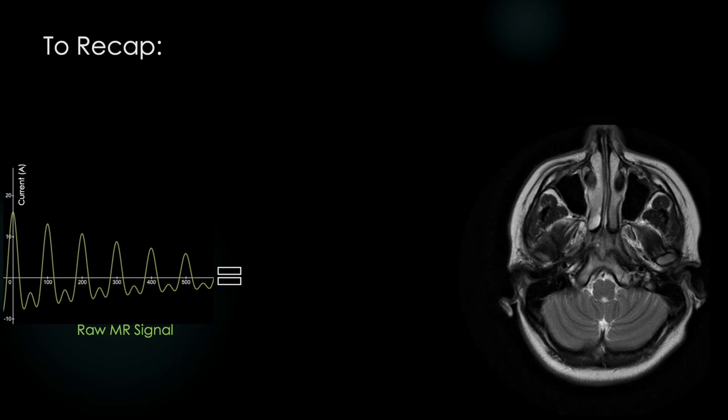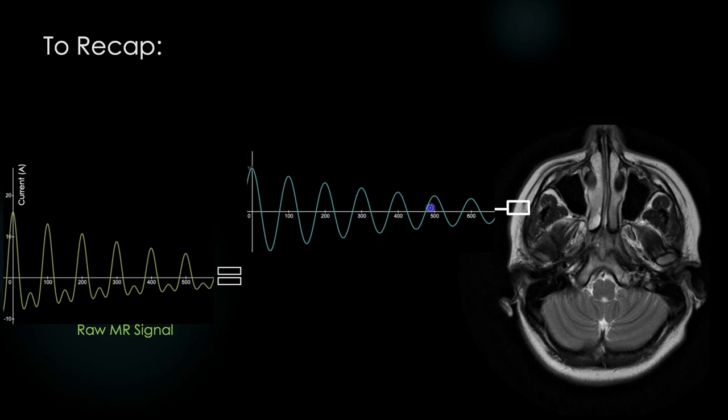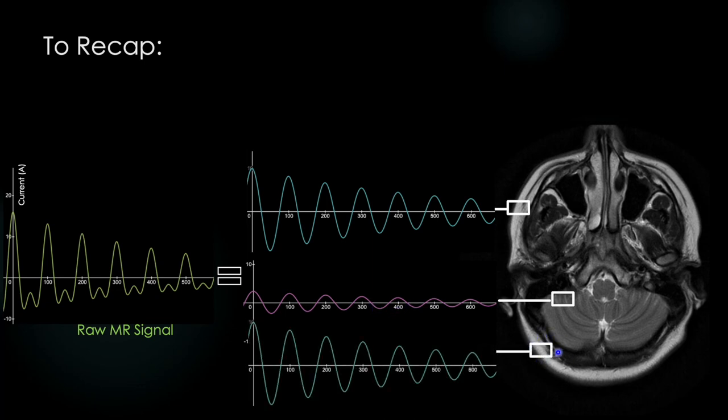So we can choose a voxel size and can reason that this voxel here, containing fat, has a T2 decay curve that looks like this. This voxel here, containing soft tissue, has a T2 decay curve that looks like this. And this voxel here, containing fat, will have a similar looking T2 decay curve to the first voxel.